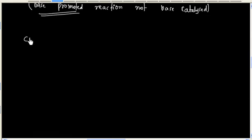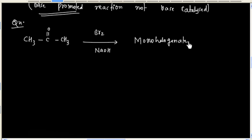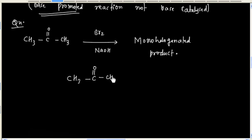For example, if we are asked to write the monohalogenated product, the product is monohalogenated. The answer will be CH₃CO-CH₂, where one hydrogen is replaced by bromine. So this is alpha-halogenation.